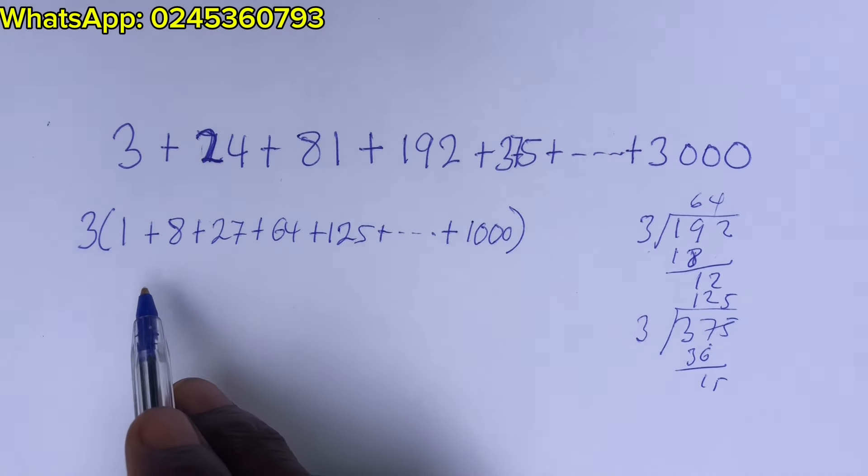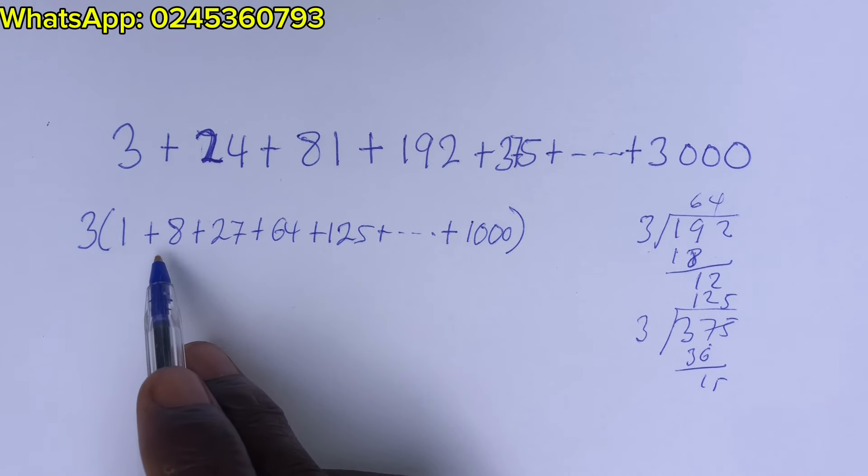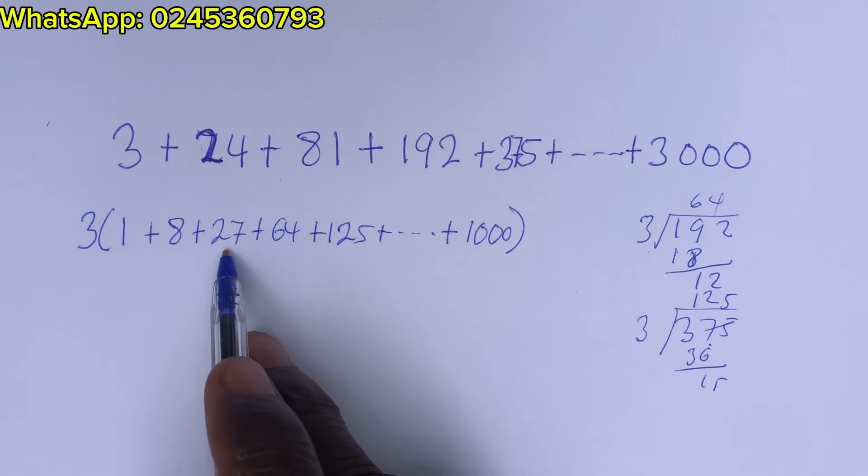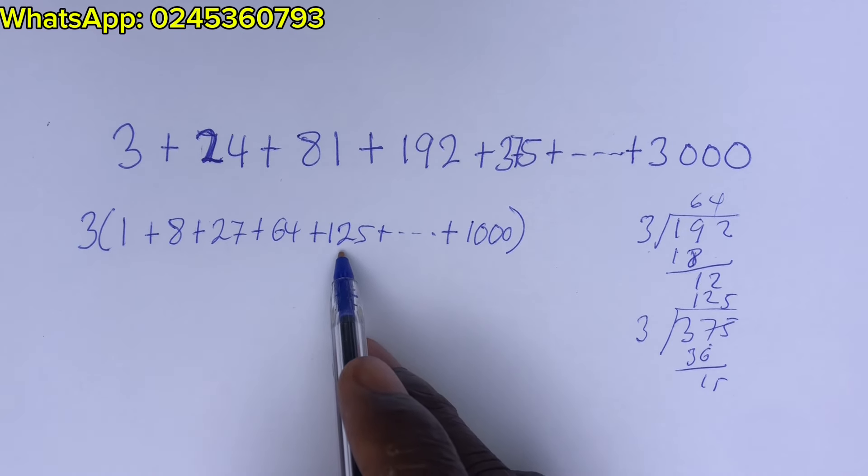Now, look at this. Wow. We have the cube numbers. 1 cube is 1. 2 cube is 8. 3 cube is 27. 4 cube is 64. 5 cube is 125.